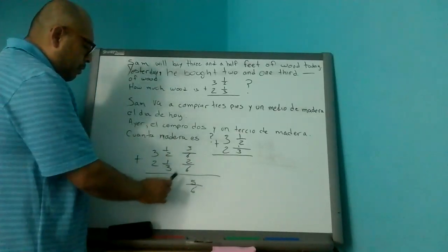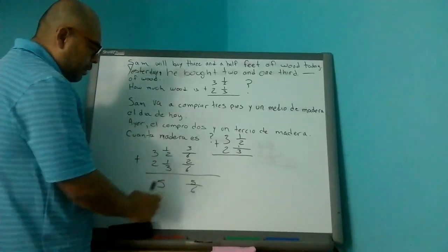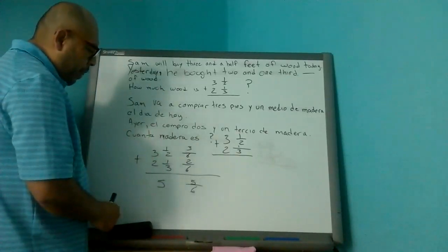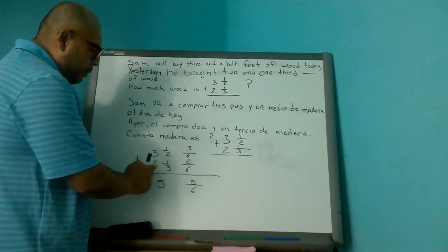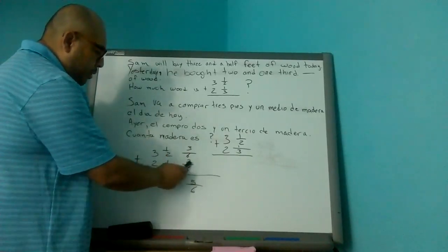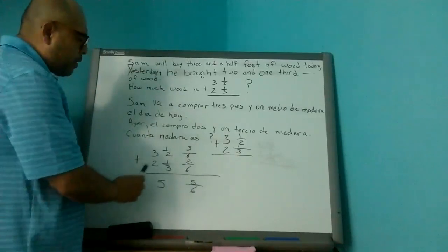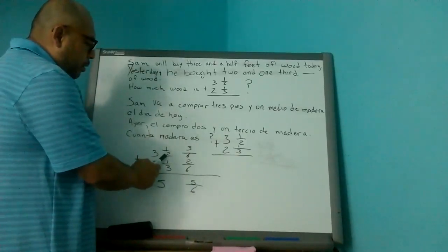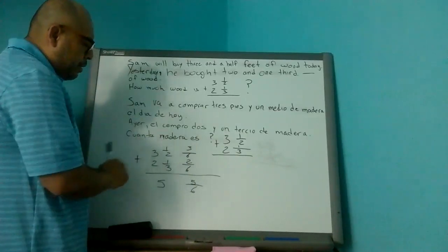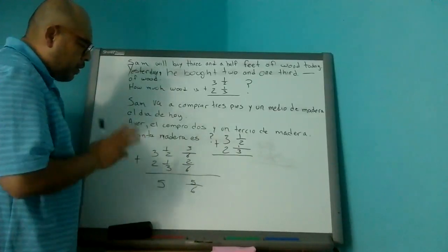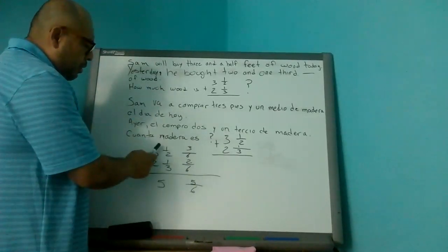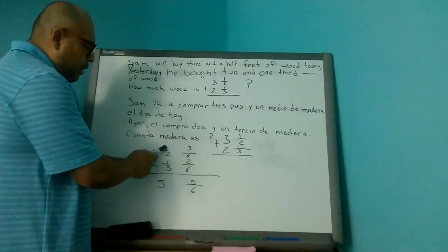Now, we divide three into six, which is two times. And two times goes one. Two times one is two. Now let's go with the next one. Two goes into six three times. Three times goes multiplying three times one is three.